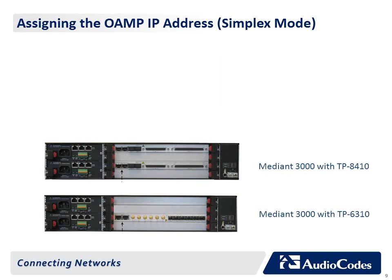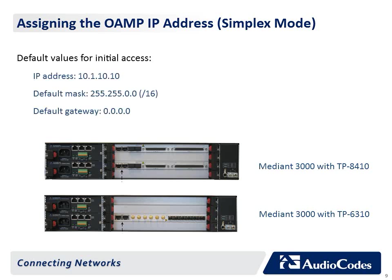The AudioCodes Mediant 3000 is shipped with factory default IP networking parameters for operation, administration, maintenance and provisioning. The default IP address is 10.1.10.10, while the default mask is 255.255.0.0, or prefix length of 16, and the default gateway IP address is 0.0.0.0.